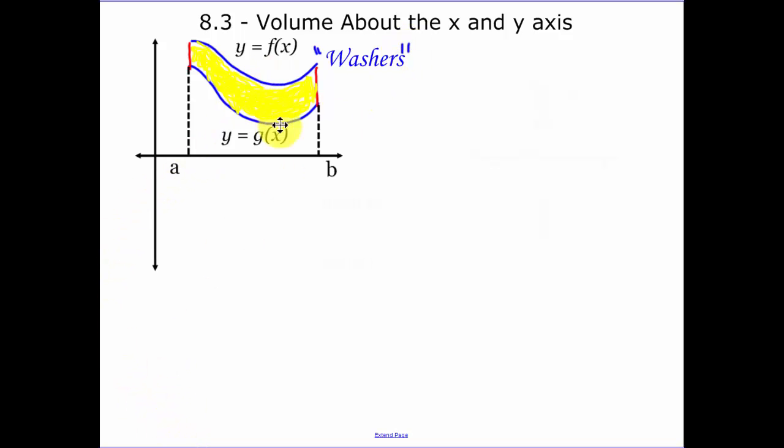Because what happens when I take an area where I'm not attached to the x axis, there's a little bit of a gap, when I take that area and I revolve it around the x axis, I'm going to have a hole in my function. Now if you think about this, this top function, we're going to have a circle here, and then another circle for the bottom function, our g of x function.